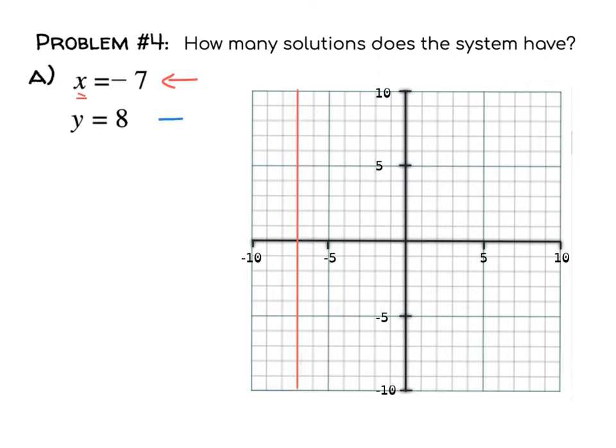Then we have this equation that I'll mark in blue, and that's going to cross the y-axis. We're going to cross the y-axis, and it says y equals 8, so that's the axis you're going to cross. You're going to cross it at 8, so we put a horizontal, perfectly horizontal line at 8.